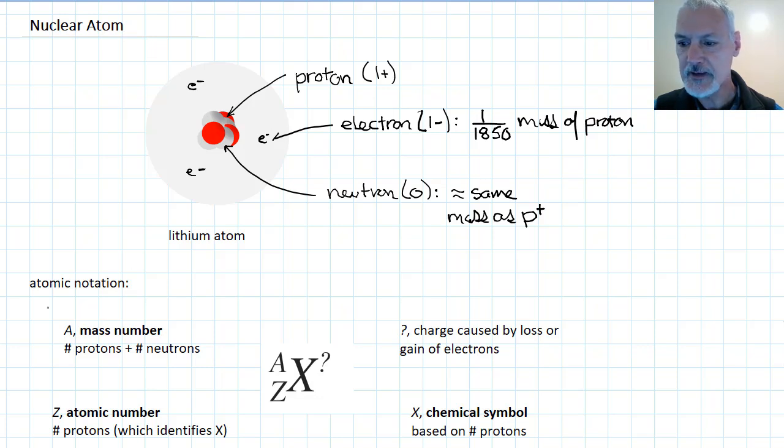Now we can represent this by something called atomic notation. Here is an example of how this will work. First of all, up here, this represents the total number of particles that are in my nucleus, called the mass number, since most of the mass of the atom is made up of protons and neutrons. Down below, Z here, this represents the number of protons that are present in the nucleus. And in a neutral atom, the number of protons and the number of electrons will equal each other.